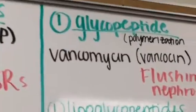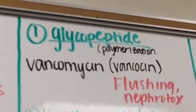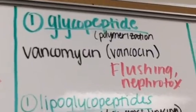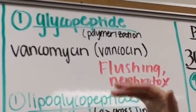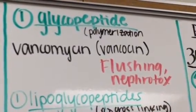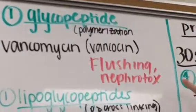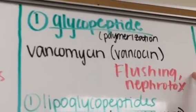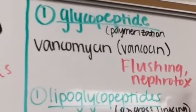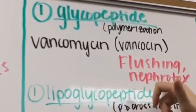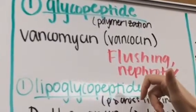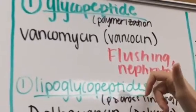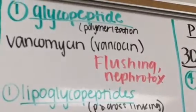Then we move into our glycopeptide, specifically vancomycin. A key side effect I like to remember is Red Man syndrome — think of the flushing. It's also severely nephrotoxic, so we worry about patients that have declined kidney function.